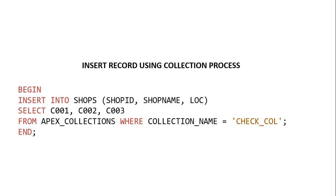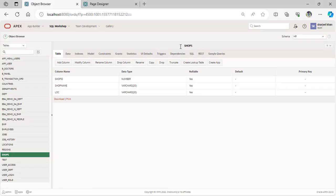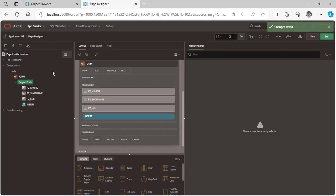When you create an add member collection process, the last step is when the user submits a record using the page items. This performs a PL/SQL process to insert the record using the collection. Normally: begin insert into your table name with the columns, and the values replaced with your collection — select collection name from apex_collections where collection_name equals your collection name.